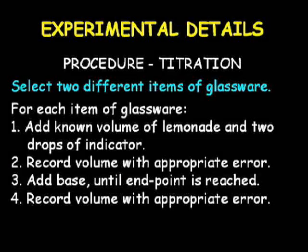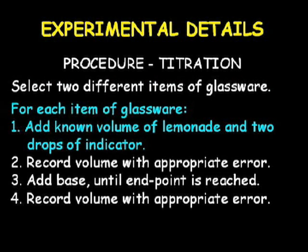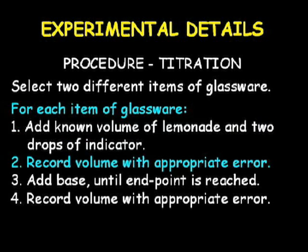For the titration portion of the experiment, you will first select two different items of glassware from a central store. You will also have a third item of glassware, which will be a burette. For each item of glassware, you will use an autopipette — make sure you have watched the autopipette video — to add a known volume of lemonade to the glassware. Two drops of the indicator will also be added. You will then need to use the graduations on the glassware to measure the volume of liquid.